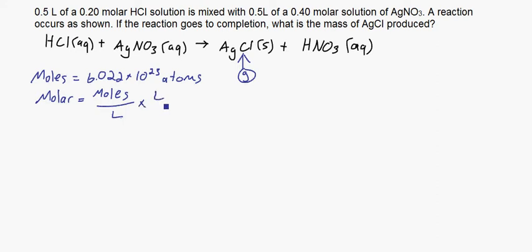And that will cancel out the liters and you'll get moles. So that's why when you multiply these two values, so let's do that real quick. So again, this is a molar solution. So this 0.20 is basically your moles per liter. And if you multiply it by 0.5 liters, liters cancel out and you get moles.